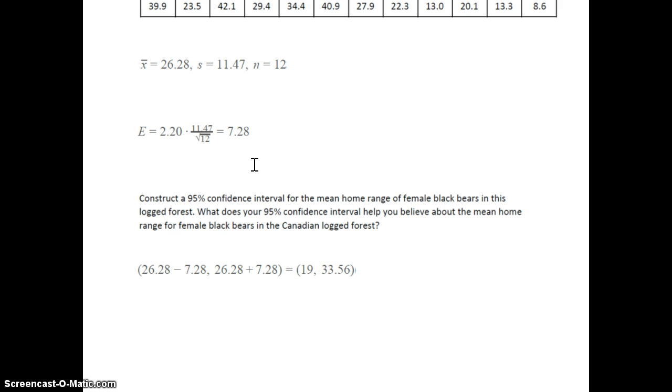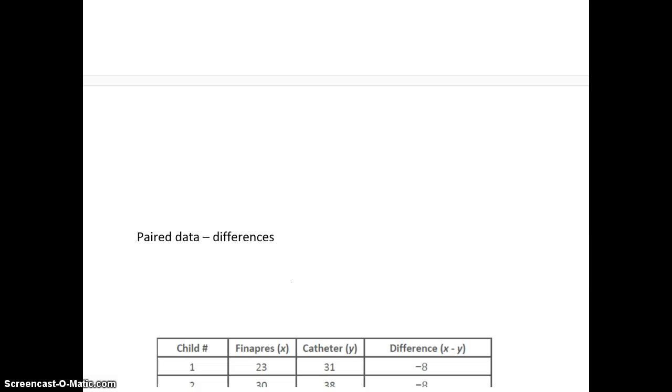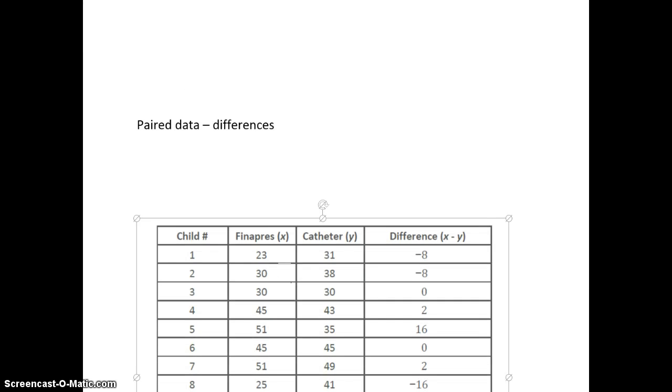So now, to construct a 95% confidence interval, x-bar minus the margin of error, x-bar plus the margin of error. And so we get an interval from 19 to 33.56.